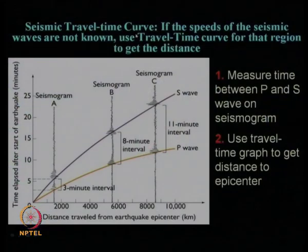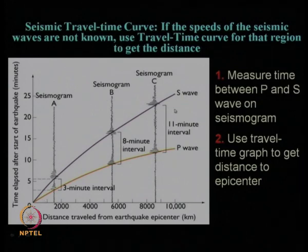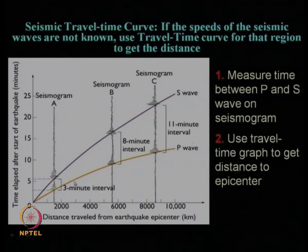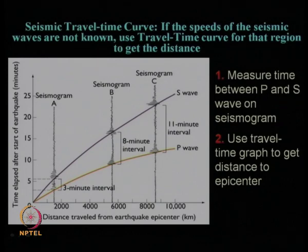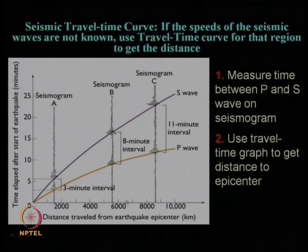We can use the seismic travel time curve method. In this case, where speeds of the seismic waves are not known, but various seismograms located all around the world have been collected, we can use the arrival time difference between S and P wave — say the time difference is 3 minutes, 8 minutes, or 11 minutes. Accordingly, 3 minutes is closest to the epicenter, 8 minutes is a little further, and 11 minutes is even more distant.